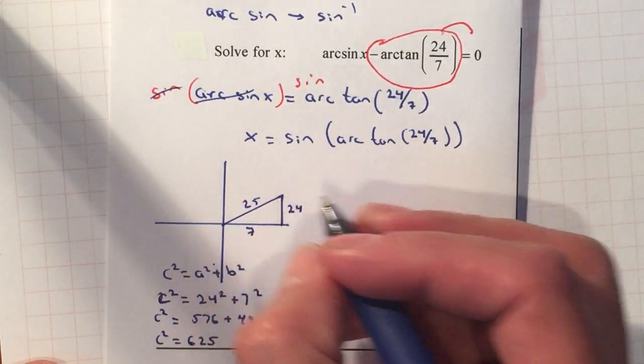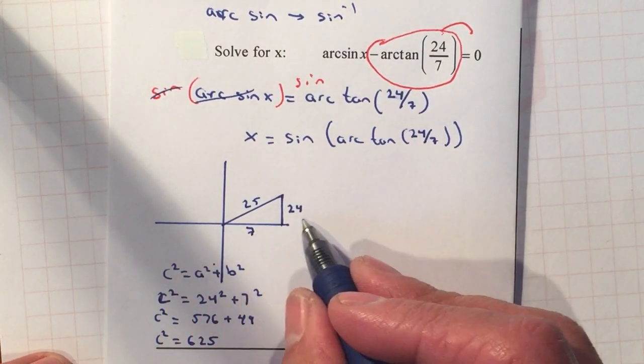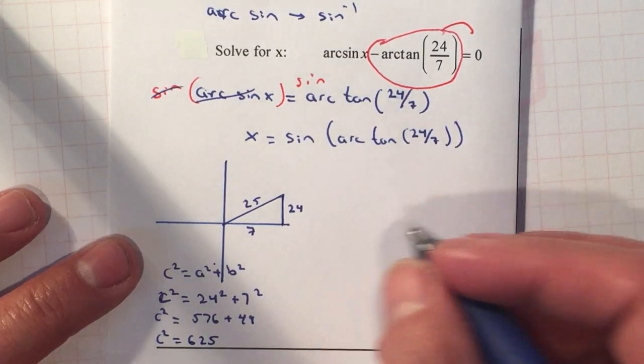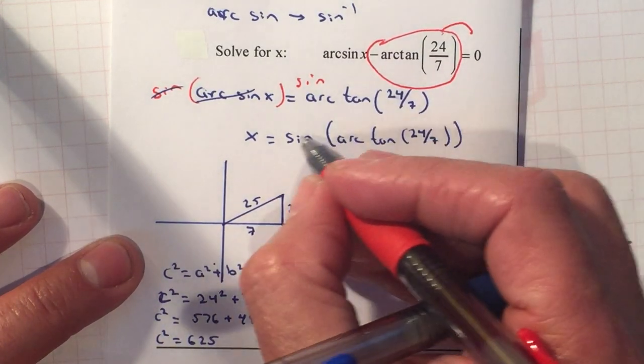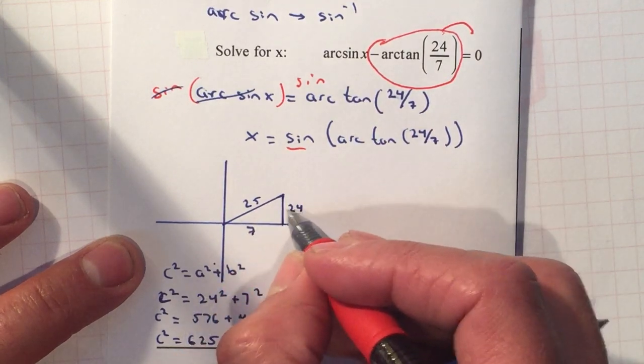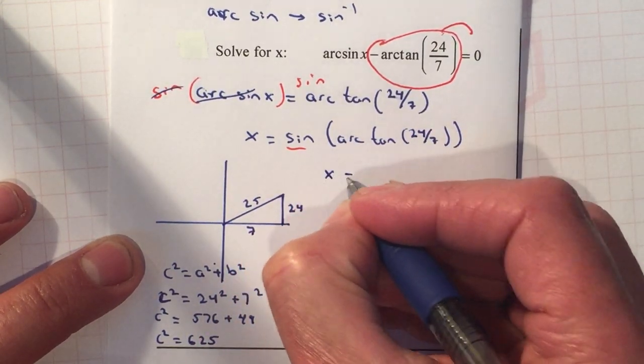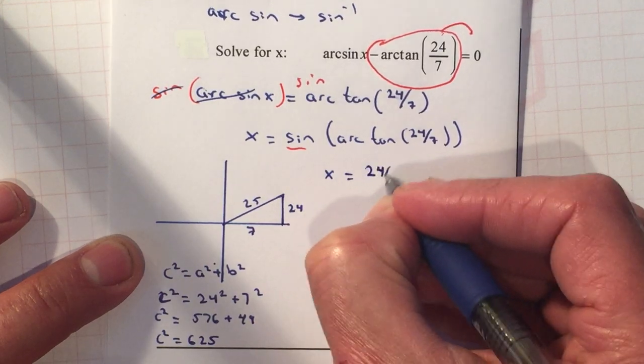Some of you may have already memorized the 7-24-25 Pythagorean triple. Now I can find the sine, which is your opposite over hypotenuse, so therefore X equals 24 over 25.